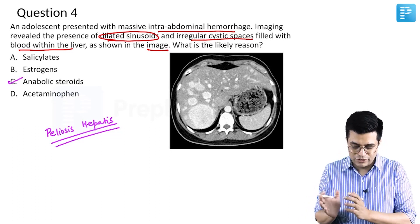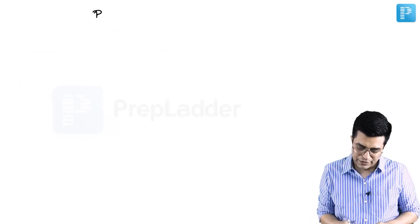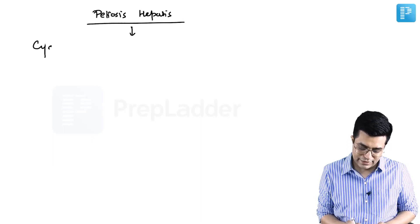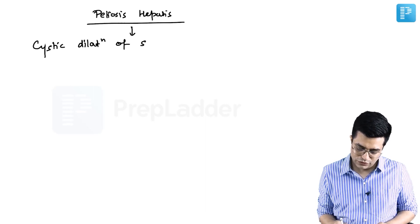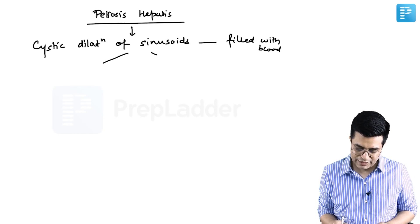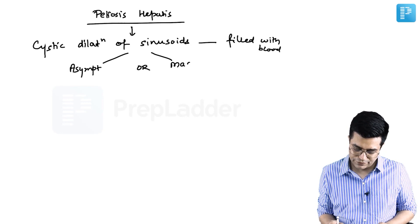What are the key points to remember about peliosis hepatis? It is a condition in which there is cystic dilatation of sinusoids in the liver, which are filled with blood. Patients can be asymptomatic or may present with massive intra-abdominal hemorrhage.